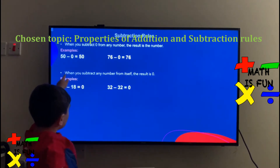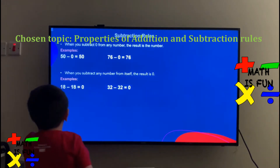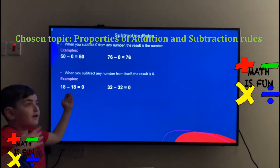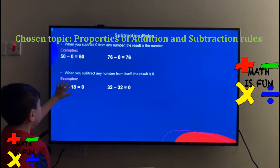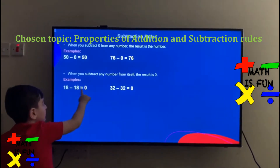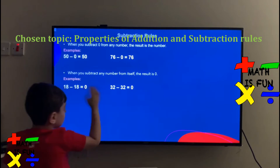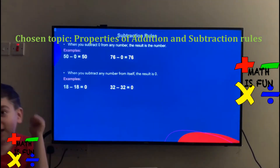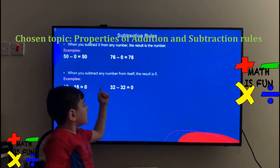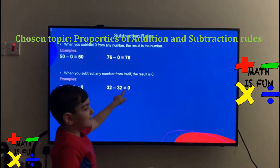Now we're going to talk about when you subtract any number from itself, the result is 0. Like 18 minus 18 — it's minusing itself, and that's why it's 0 because it was taken away. 32 minus 32 equals 0, because the 32 is taken away and it became 0 because it minus itself.